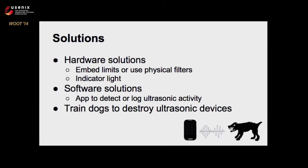There are a few solutions you can implement. Based on questions from the previous talk, we know some of these might be hard to sell to phone companies, but you can embed a light that would indicate when the speakers are being used. You can also have hardware limits on your speakers that prevent them from producing any ultrasonic sounds, or a very simple solution for privacy-conscious people is a physical filter on a phone case so sound has to go through a physical barrier that blocks ultrasonic frequencies but not lower frequencies. You can also have an application that detects suspicious ultrasonic use. And lastly, my advisor suggested: if you have a dog and you train it to eat your phone when it makes these noises, it'll work too.